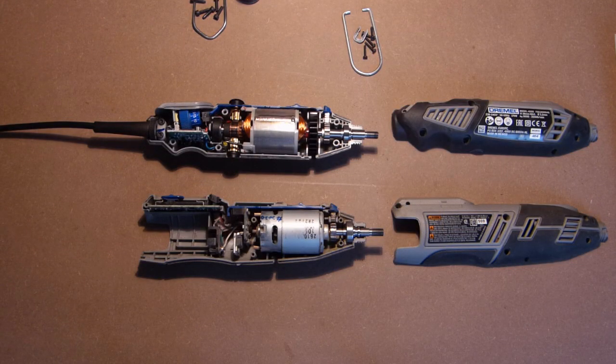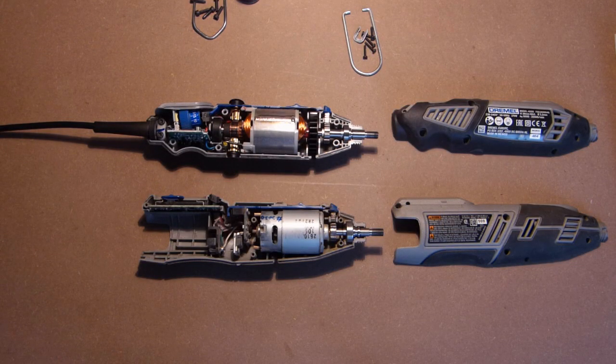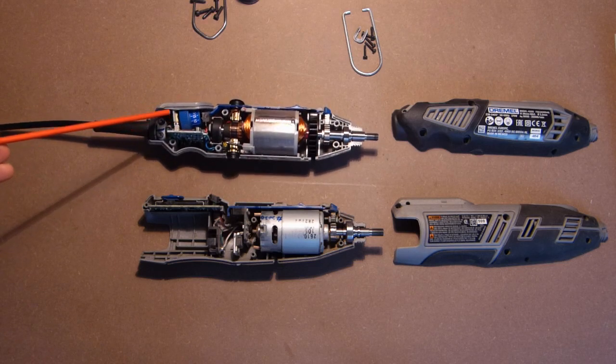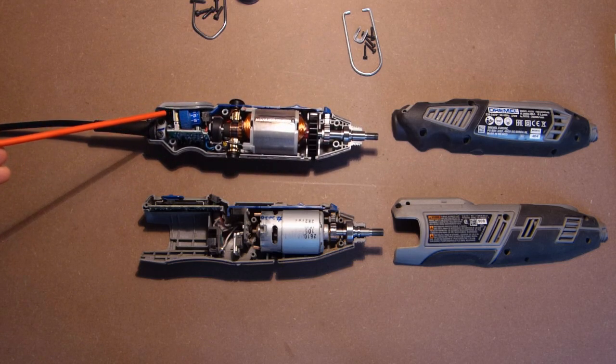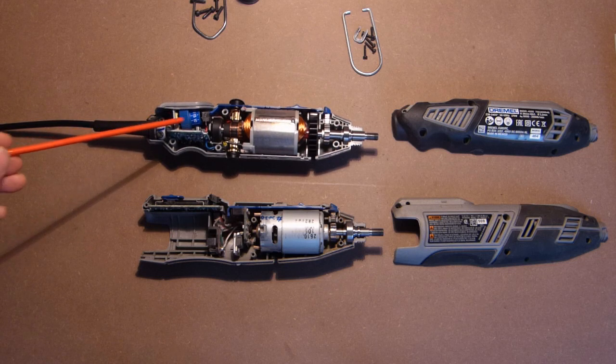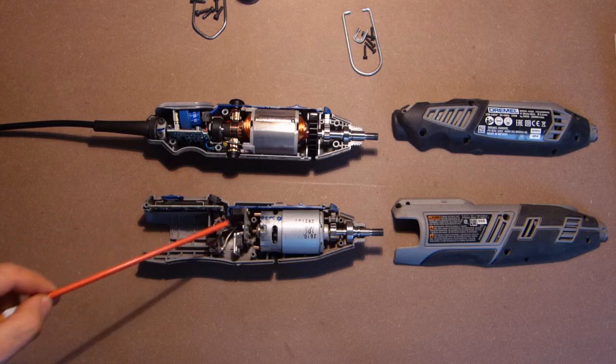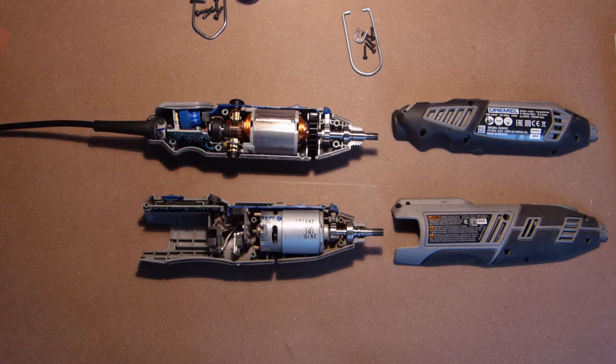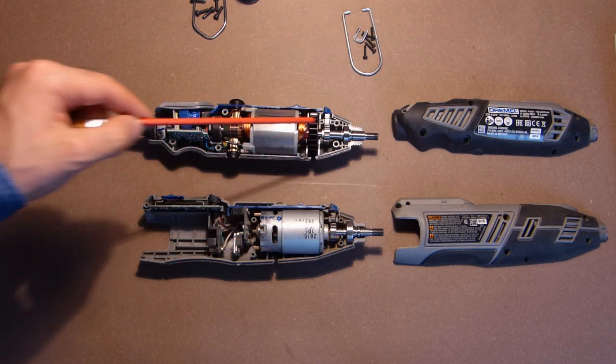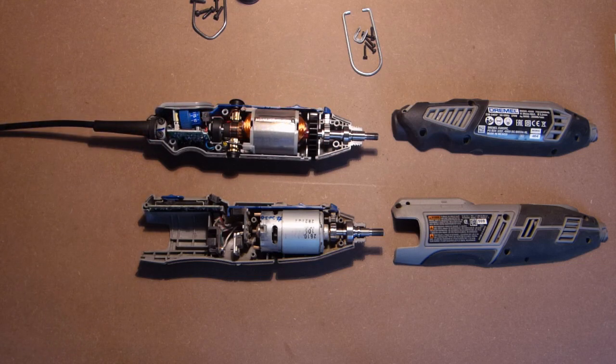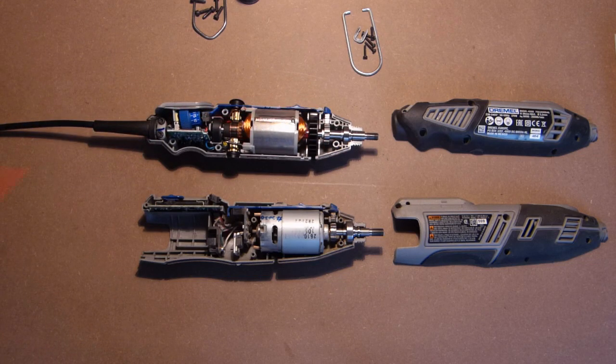You can see the main differences of these two devices. This board has only the potentiometer and this board is soldered to the main board. Here we have two boards, we have the transistors and this is the speed change board. The motors naturally are different. This is the cooling system and the cooling system of the DC motor is inside of it.